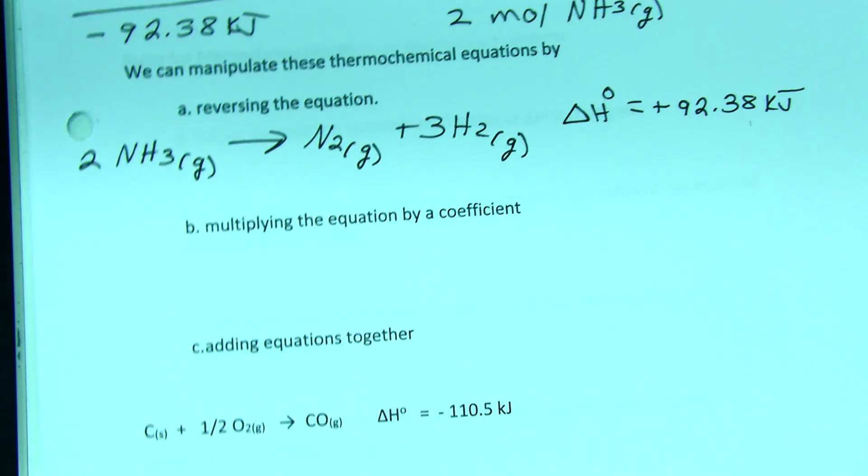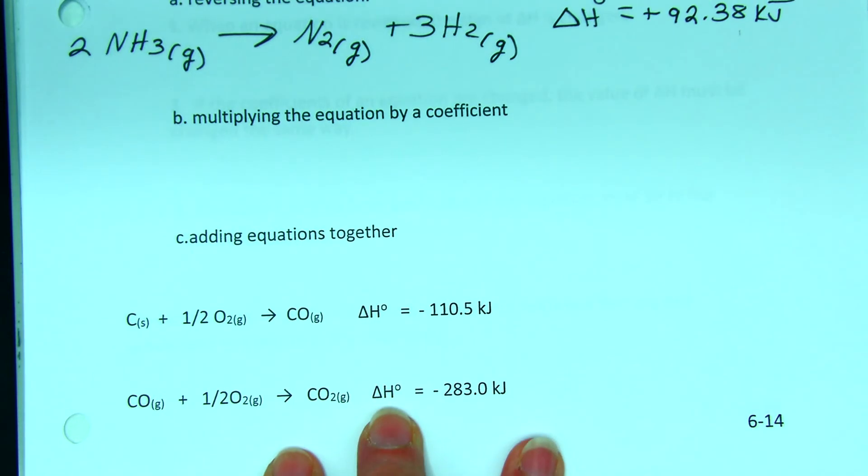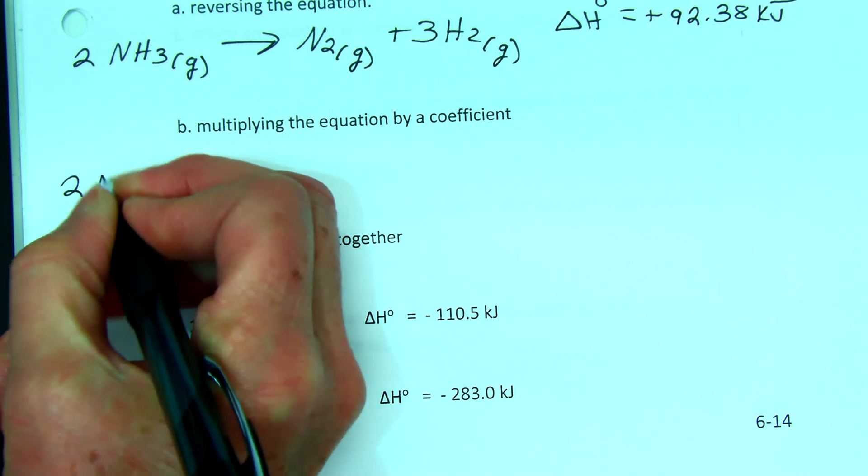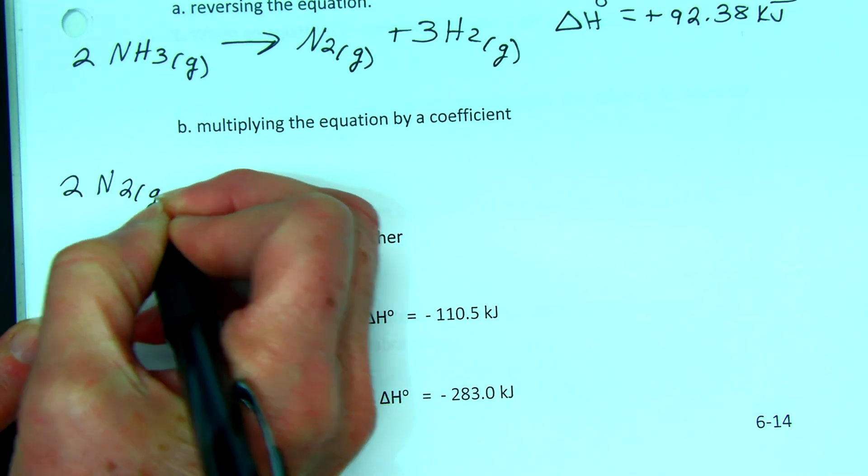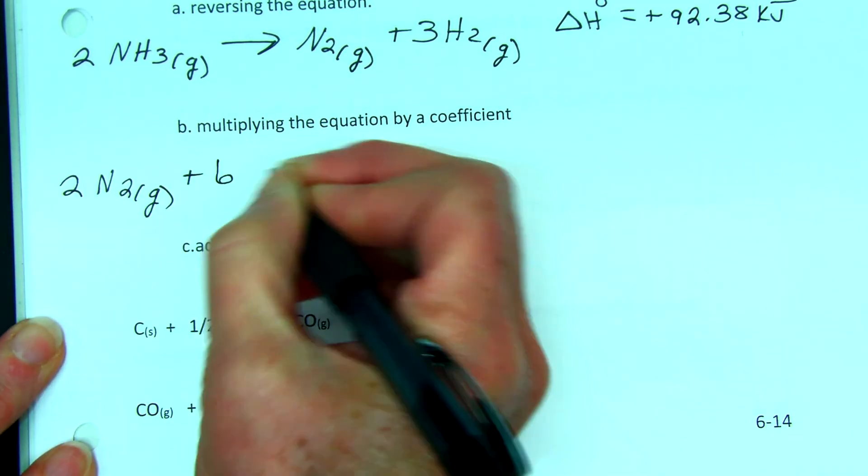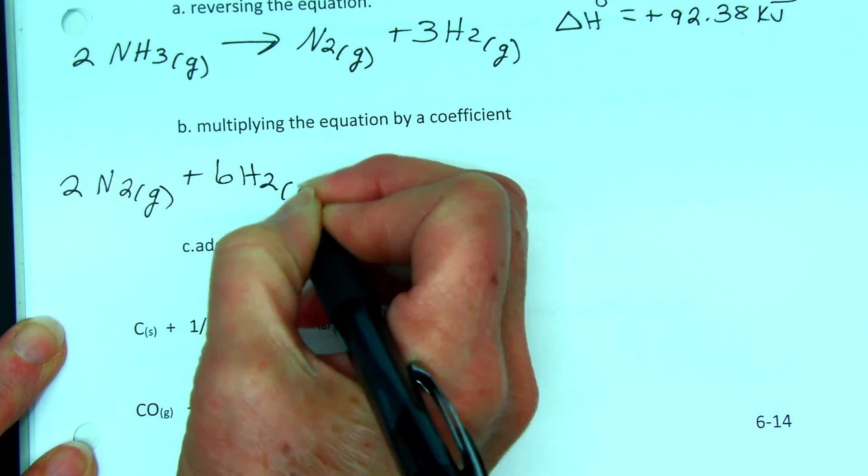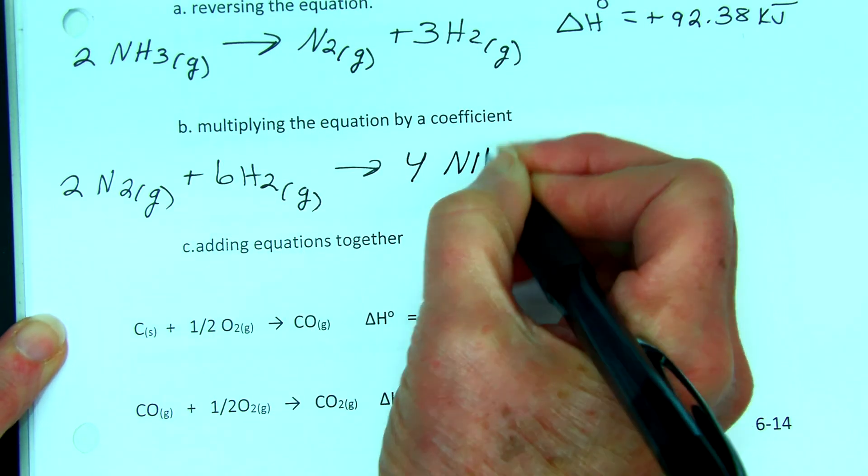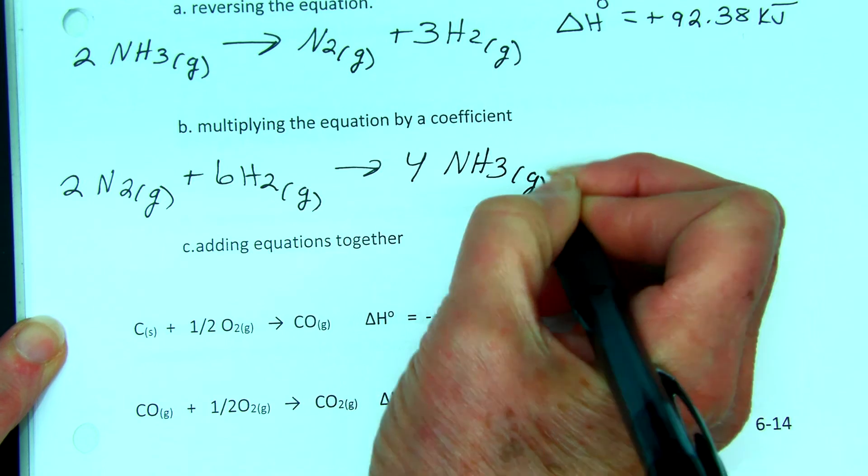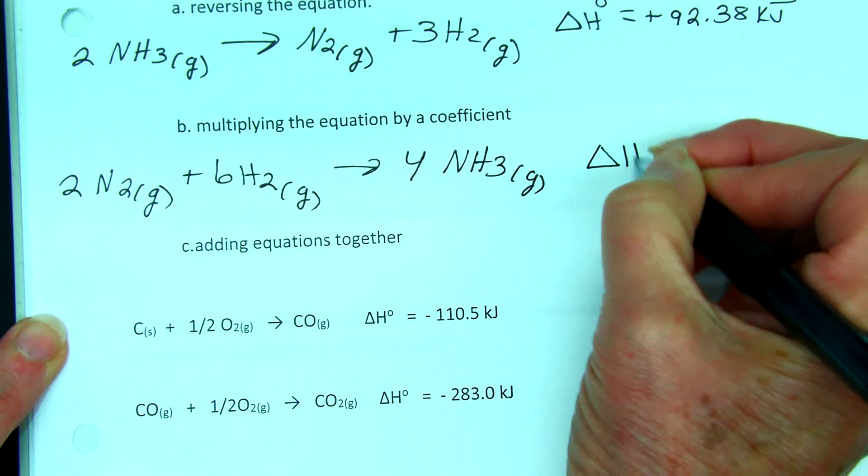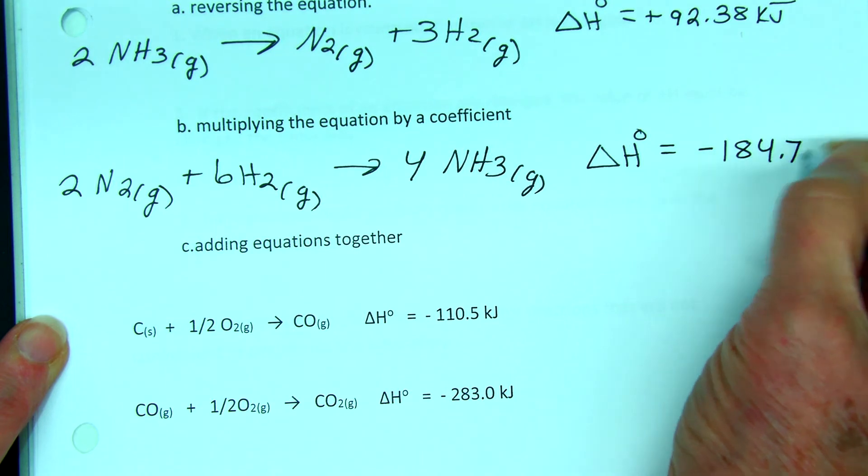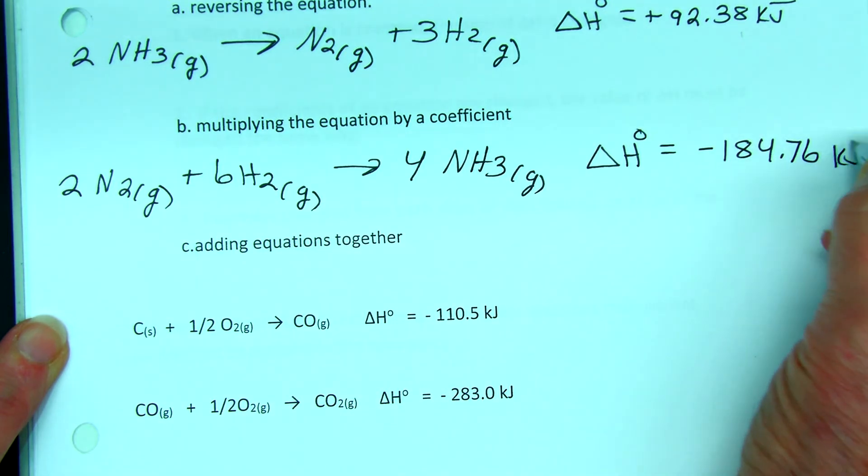We can also multiply the equation by a coefficient. So now I'm going to take my original equation, and I'll multiply it by two. So I now have two nitrogen gas plus six hydrogen gas yields four ammonia gas. When I multiply it by two, I multiply the enthalpy term as well. So I get negative 184.76 kilojoules.